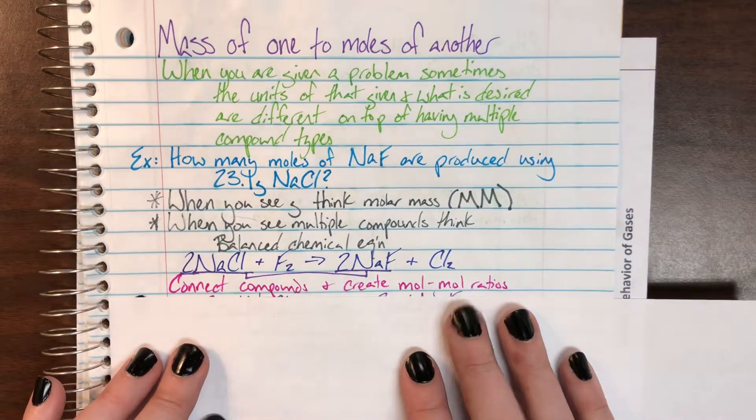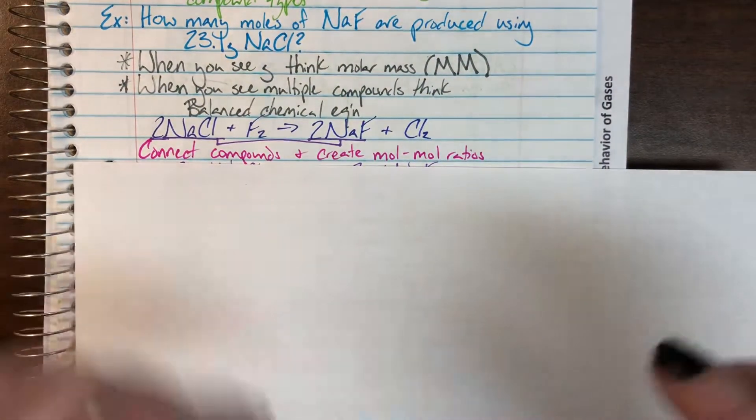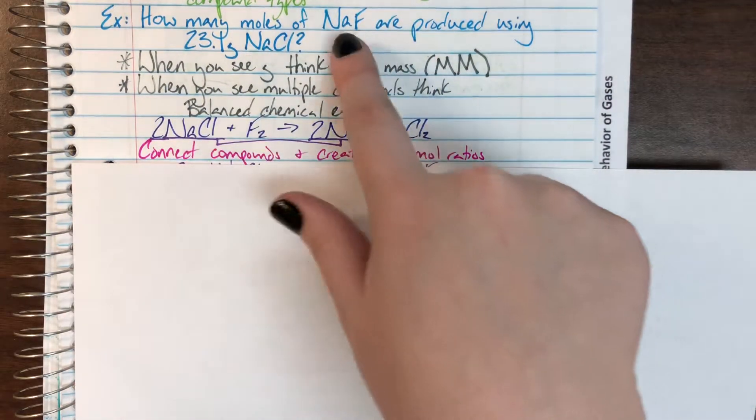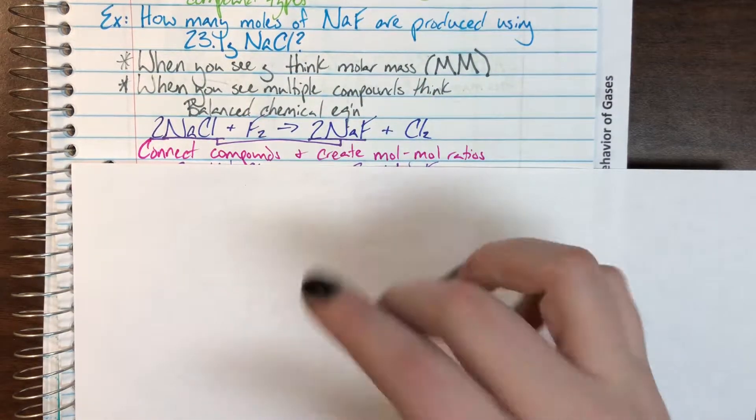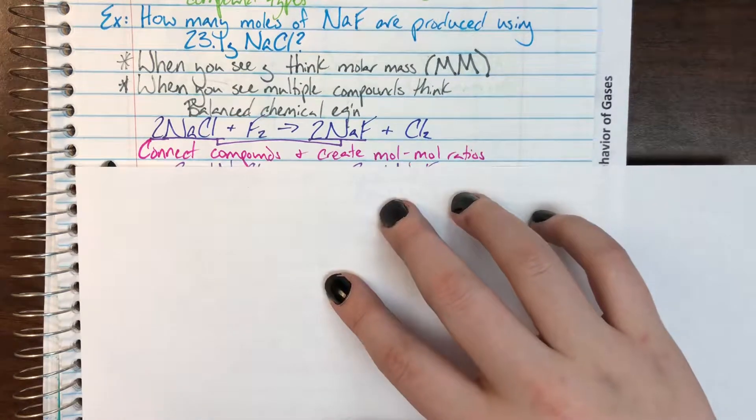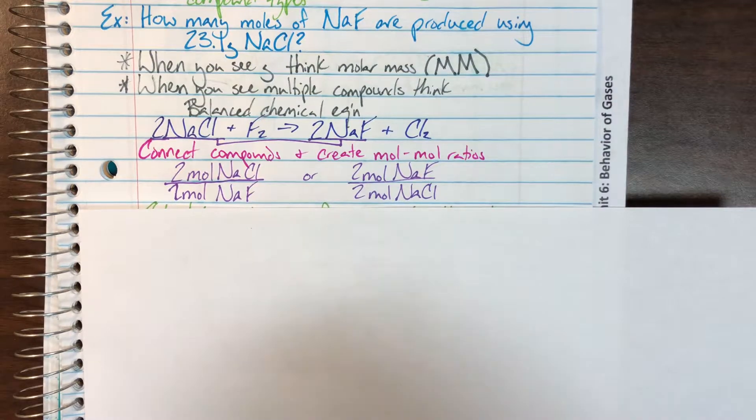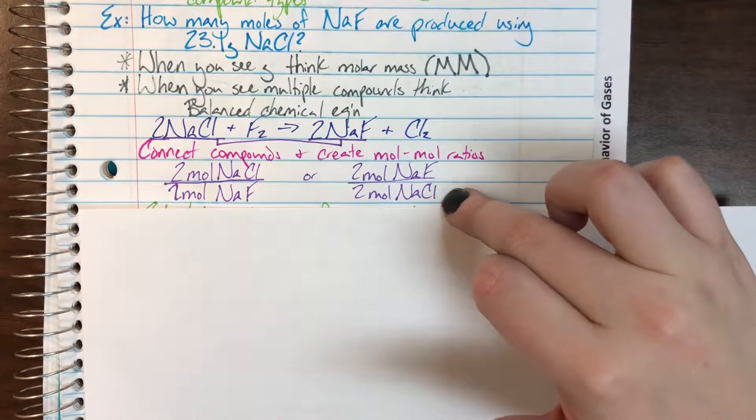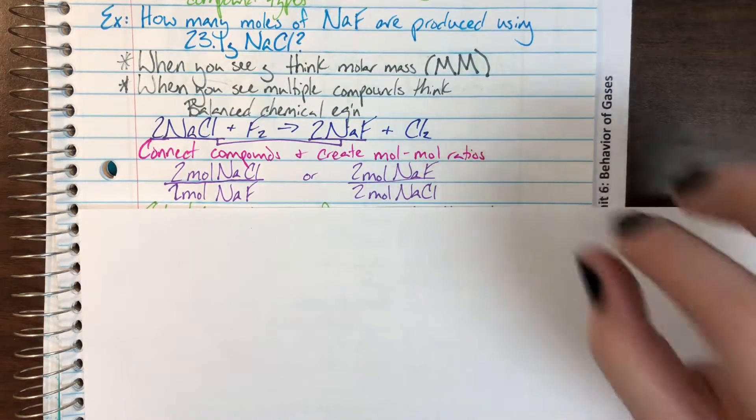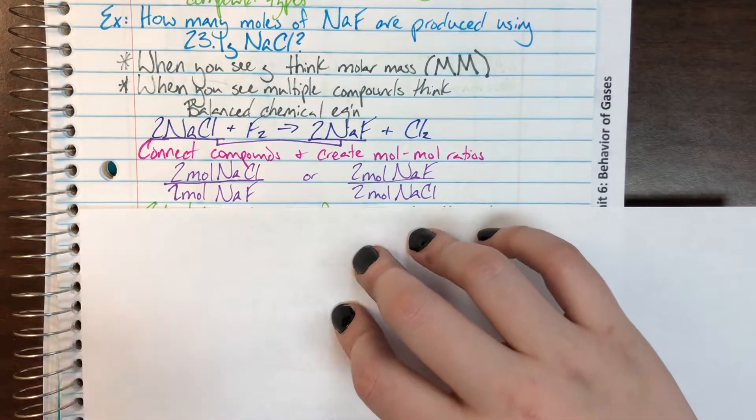We're going to connect the compounds that we actually care about, which is going to be sodium chloride and sodium fluoride. We're going to create those mole to mole ratios. So that means I need them both ways. For every two moles of sodium chloride, I have two moles of sodium fluoride. Or for every two moles of sodium fluoride, I have two moles of sodium chloride. Those are going to be our mole to mole ratios that we can use in this problem.